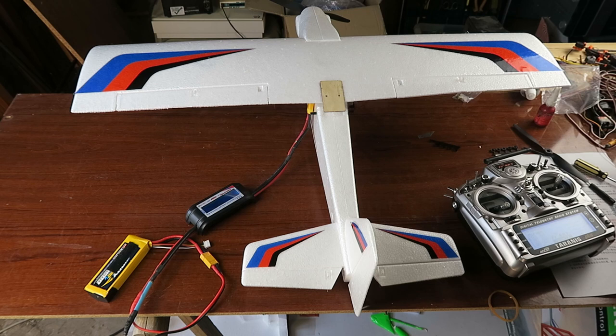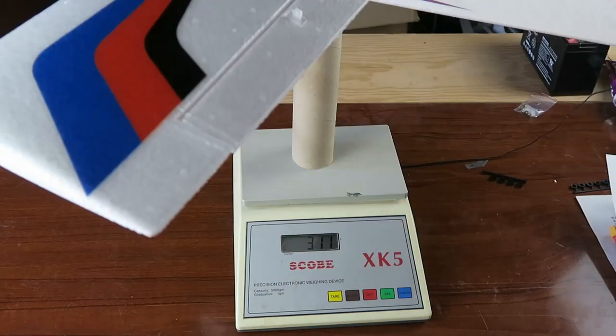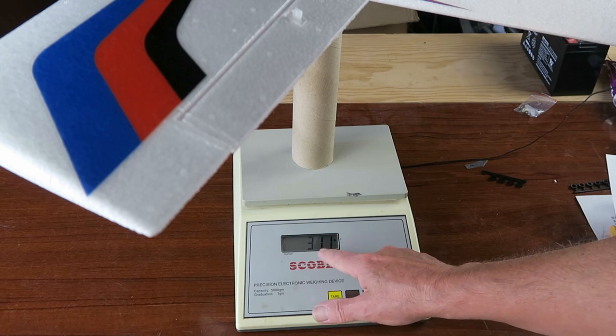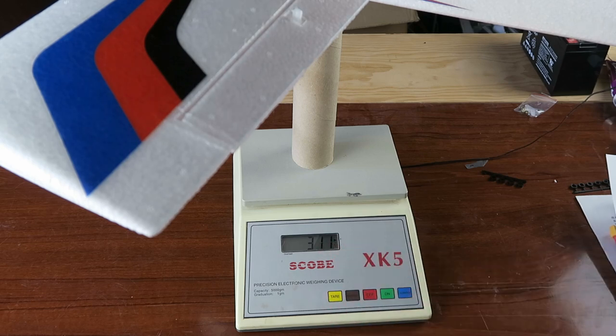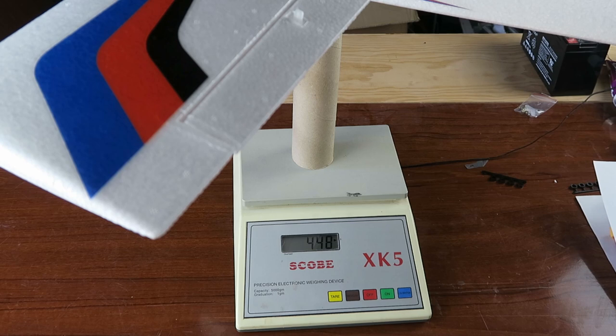All the controls are moving in the correct direction and we have full throttle. Let's check the weight now. With the scales zeroed out, the plane itself with no battery comes in at 311 grams, and with the battery 448, so 450 grams in round money. In the documentation it says the flying weight is 420 to 500 grams. I guess we could easily accommodate a slightly larger battery pack, maybe up to 2200 milliamp hour. Time to go to the field.